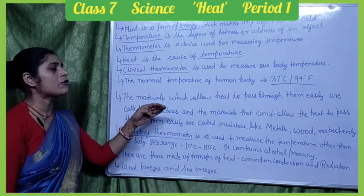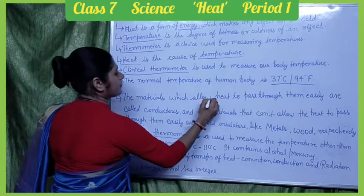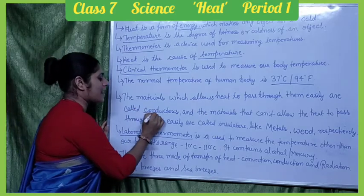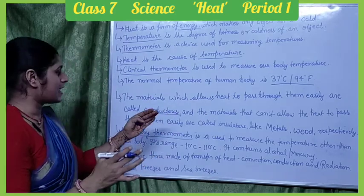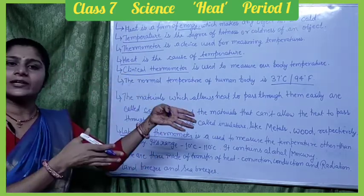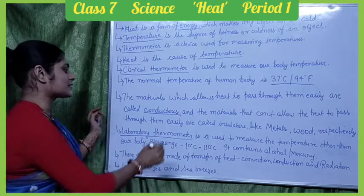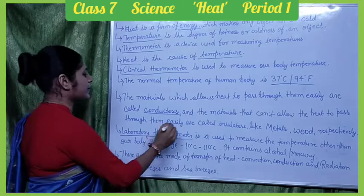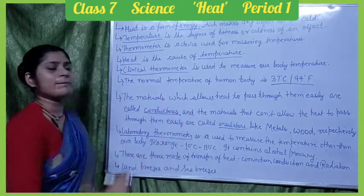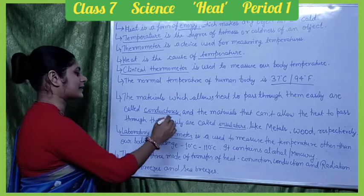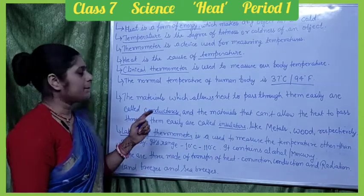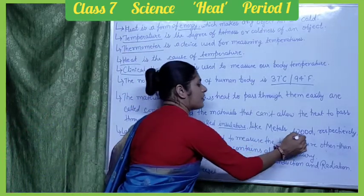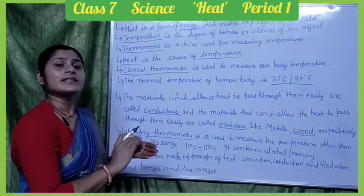Materials which allow heat to pass through them easily are called conductors. Materials which do not allow heat to pass through them are called insulators. For example, all metals are conductors, and wood is an insulator.